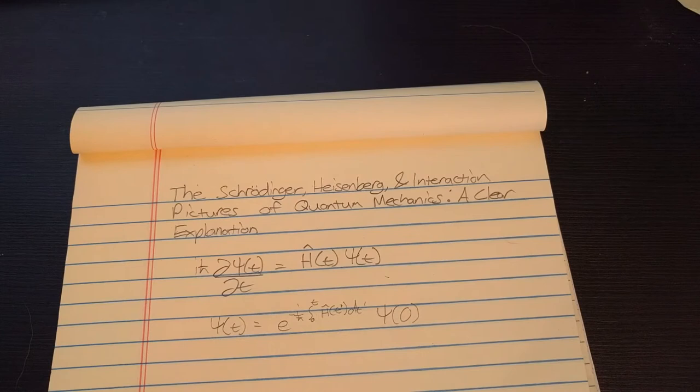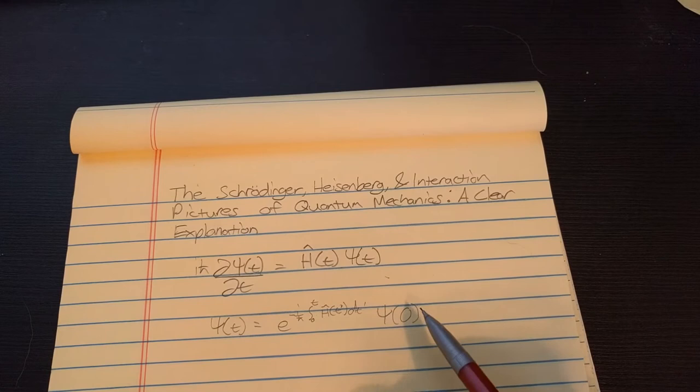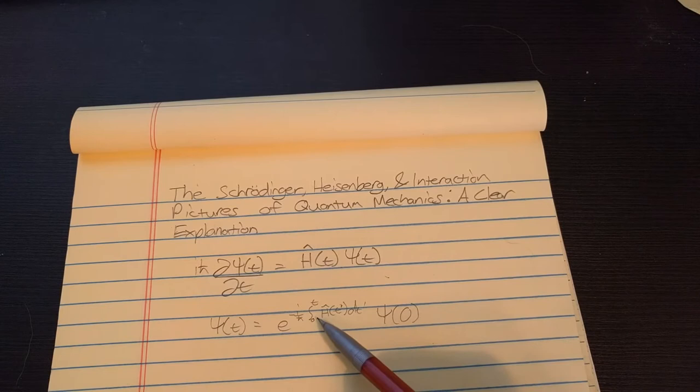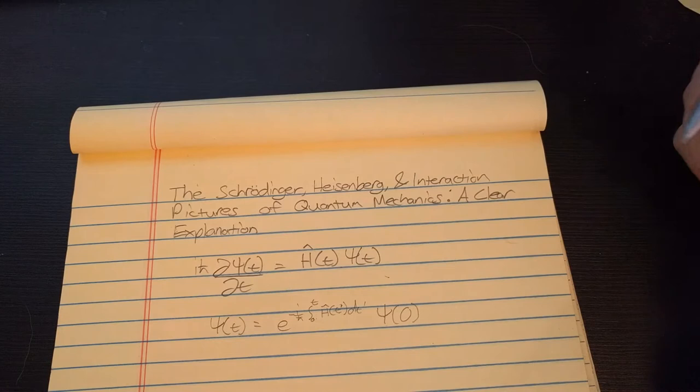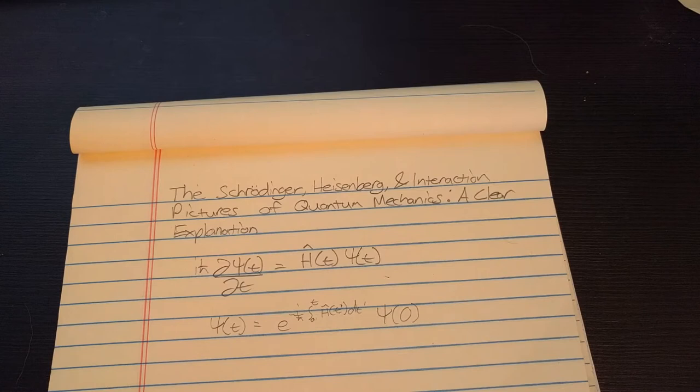We're assuming our initial conditions are at time t equals 0, so our wave function is psi(0), and that's why our lower bound is 0 here. This is the most general form of the solution. One thing which you commonly see done is that the Hamiltonian is split up into a time-independent part and a time-dependent part.